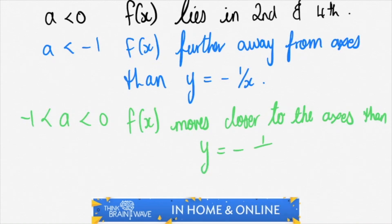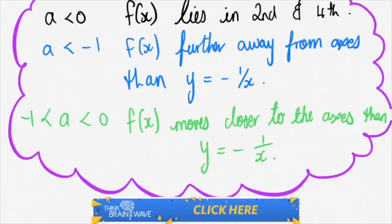So if you had, for instance, negative 0.2 over x, you'd be very close to the axes. Remember as we noted at the top here.